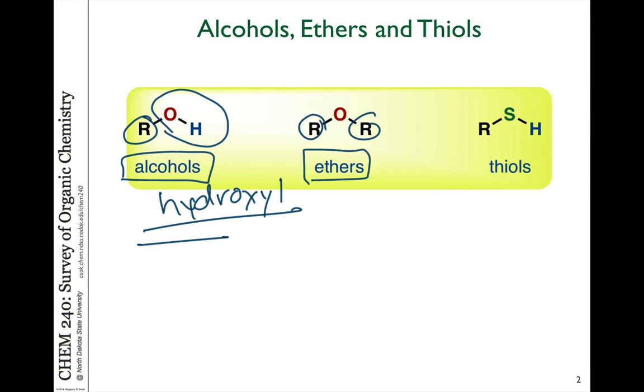And related, if you go down one row on the periodic table, sulfur is just below oxygen. And so there is some similarities to thiols and alcohols. So this is a carbon attached to a sulfur attached to a hydrogen. And if you have the ether analog of a sulfur compound, it's called a sulfide.